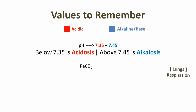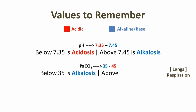PaCO2 is controlled by our lungs. Remember PaCO2 as respiration. The normal value of PaCO2 is within 35 to 45. Below 35 indicates alkalosis and above 45 is acidosis. Next is HCO3. HCO3 indicates bicarbonate, which is controlled by our kidneys.